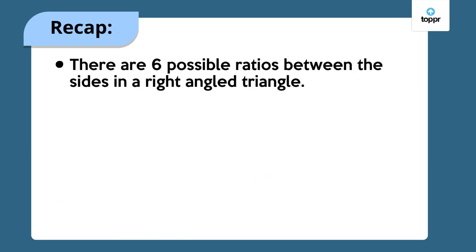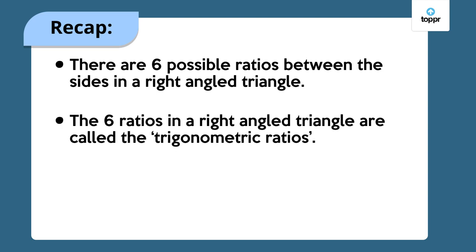We also saw that there are six possible ratios between the sides in the triangle. And at last, we call these six ratios in a right-angled triangle as trigonometric ratios, since they play a very important role in trigonometry.